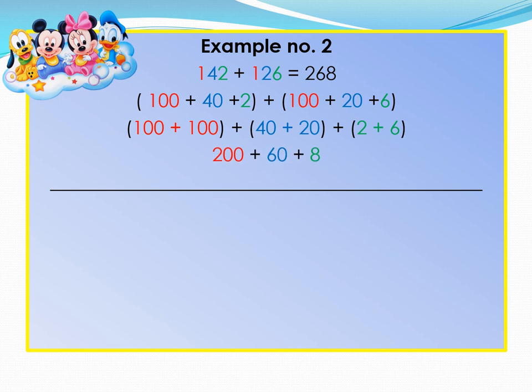Example number 3. 351 plus 248 gave us 599. How did we get that answer?